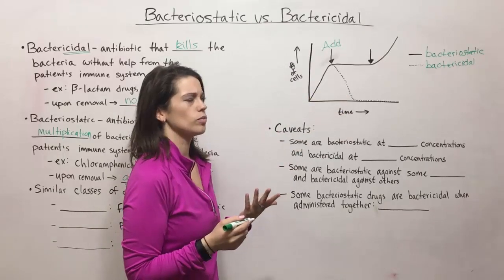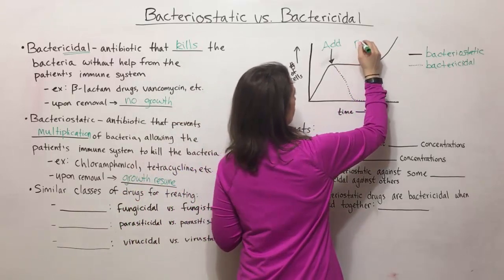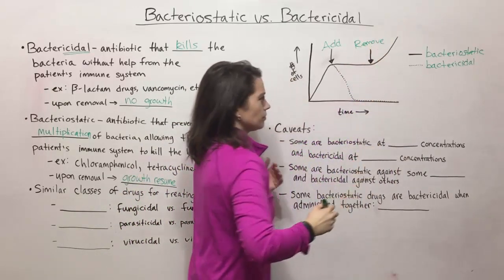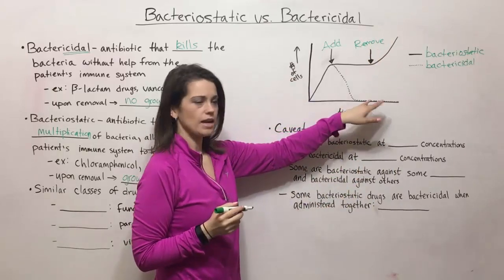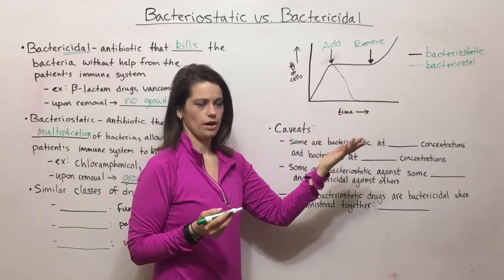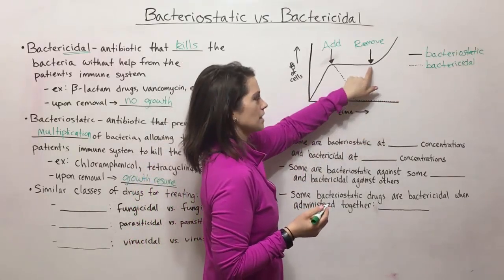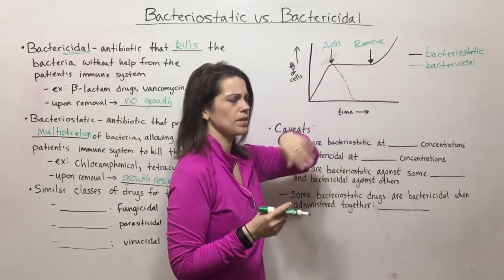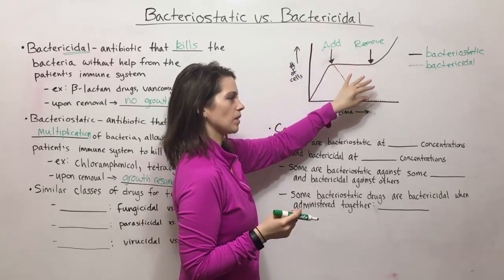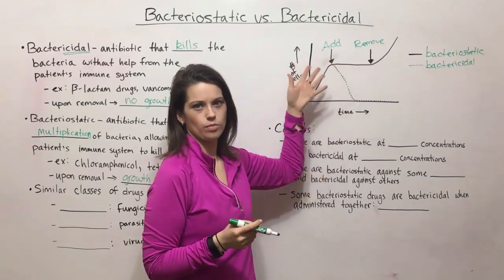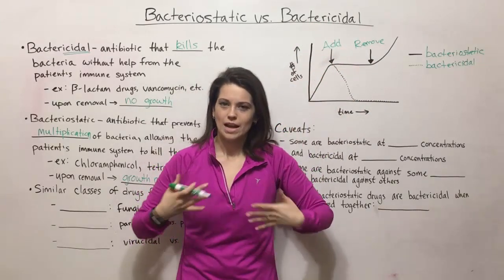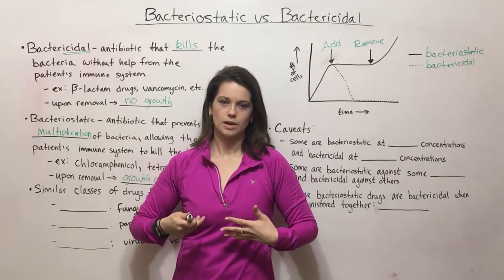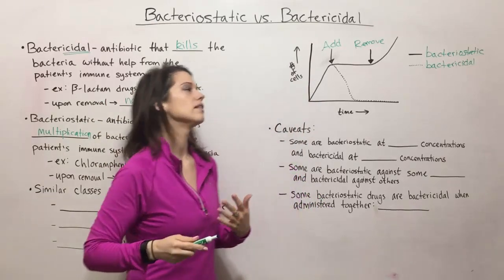Then if you remove the drug from the test tube: if it was a bactericidal drug, there would be no additional growth — all the bacteria are dead. If it is a bacteriostatic drug, growth can then resume. This is a hypothetical example in a test tube without the patient's immune system; when actually using these drugs to treat patients, the immune system is also a major player in the process.